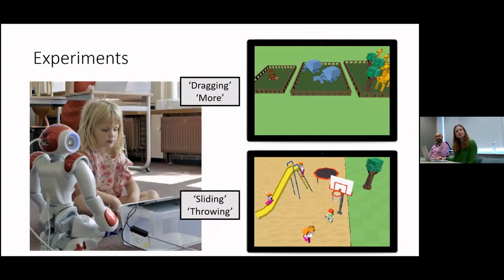They were practicing different English words together with the robot. There was a tablet in front of them displaying the contents, the environment of the words that they were learning. For example, dragging animals into cages, or words like sliding on a playground or throwing a ball.